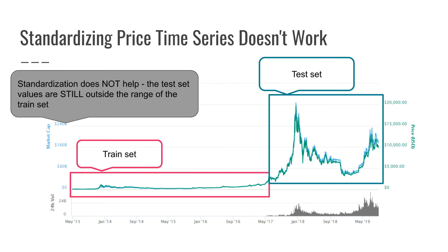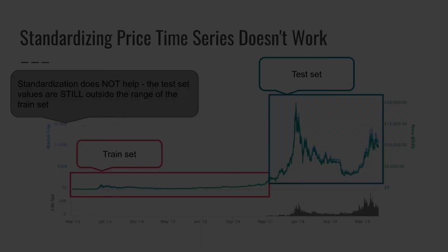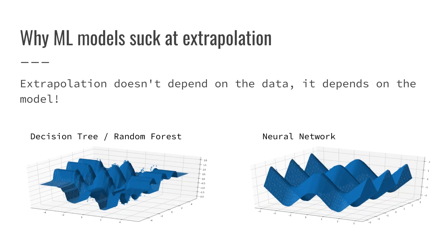The problem with prices is that they are ever-increasing. This wasn't the case for the time period used in the textbook, but it is the case in general. The train set is always in the past and the test set is always in the future, so the values in the test set will generally be higher than those in the train set. If you build an autoregressive model on this data, your model will have to extrapolate to a domain never seen before in the train set. Machine learning models are poor at extrapolation — how they extrapolate has more to do with the model itself than the data. For instance, decision trees extrapolate by going horizontally outward, while neural networks, Gaussian processes, and other models all behave differently, none related to the actual data.